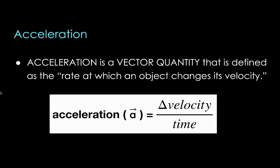First, we have to define what acceleration is, since we're talking about uniformly accelerated motion. All that you have to know is acceleration is the rate at which an object changes its velocity. In other terms, it's just a description of how fast something speeds up or how fast something slows down. And in equation form, it's simply the change in velocity divided by time.